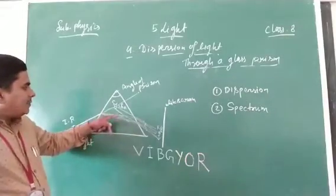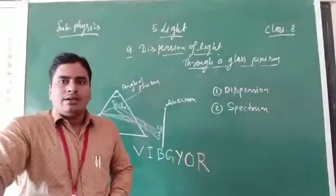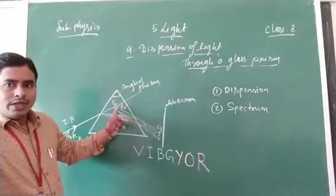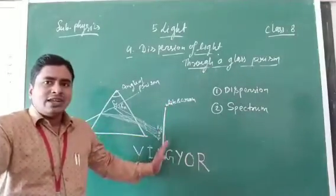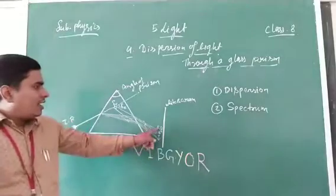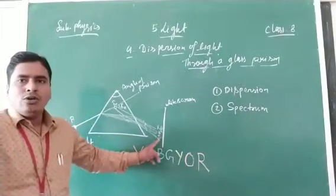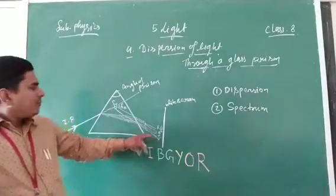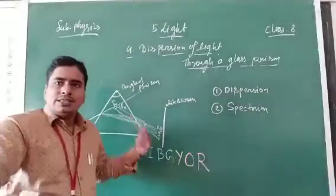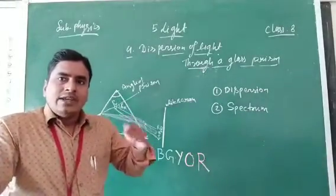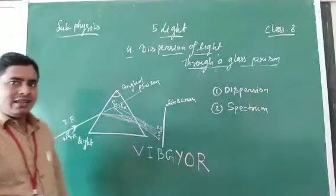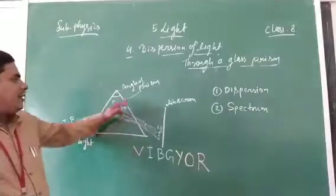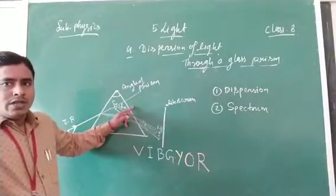When a white light passes through the glass prism, inside the glass prism it will be split into 7 colors — 7 constituent colors. After emerging out from the glass prism, we can see these 7 colors on a white screen: red, orange, yellow, green, blue, indigo, and violet. When white light emerges from the glass prism, each color of light will deviate from its original path.